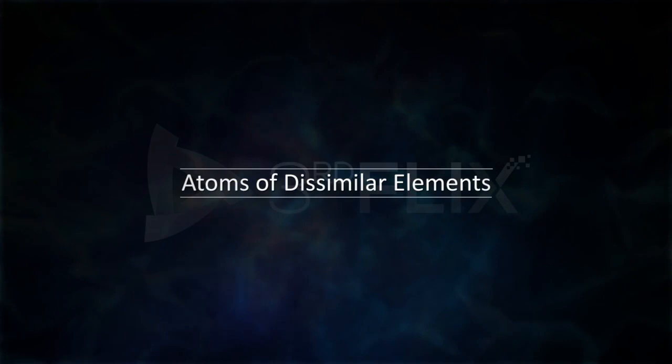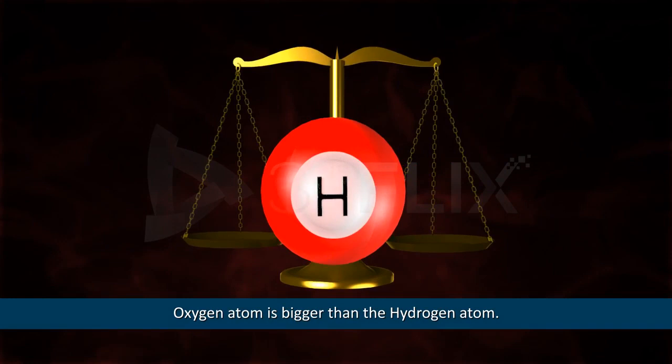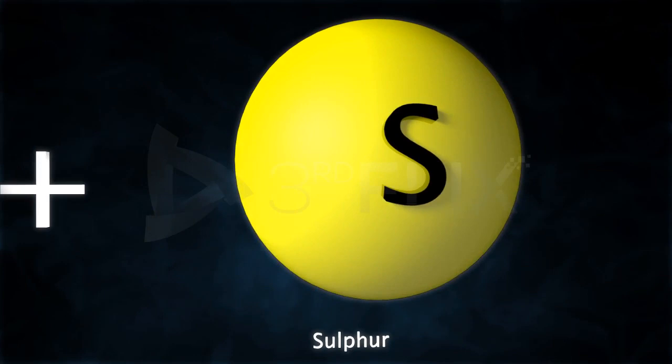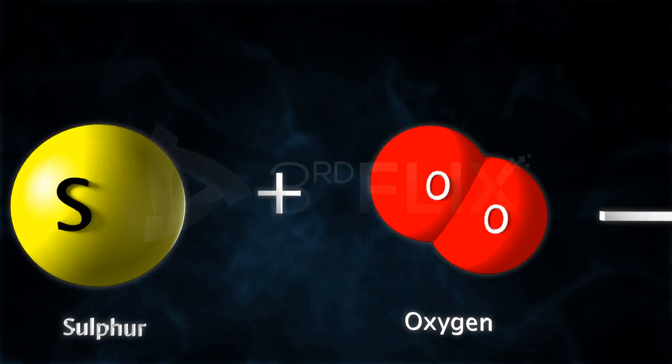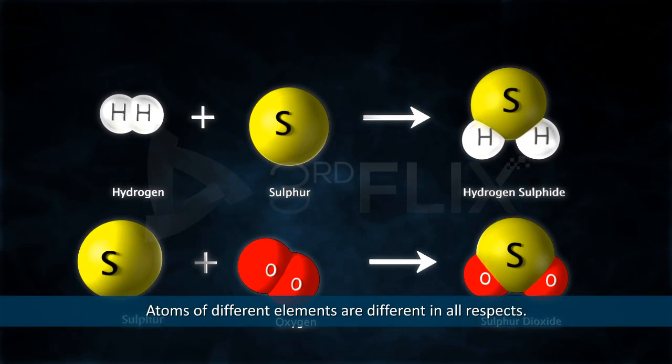Atoms of dissimilar elements. Let's now compare the atoms of hydrogen and oxygen. As you can see, the oxygen atom is bigger than the hydrogen atom, and the mass of the oxygen atom is greater than that of the hydrogen atom. If both hydrogen and oxygen are allowed to react with sulfur, hydrogen reacts with sulfur to form hydrogen sulfide, while oxygen reacts with sulfur to form sulfur dioxide — two different compounds. Therefore, Dalton proposed that atoms of different elements are different in all respects.